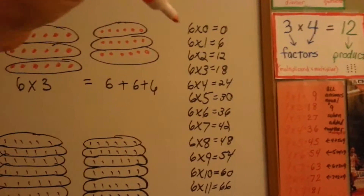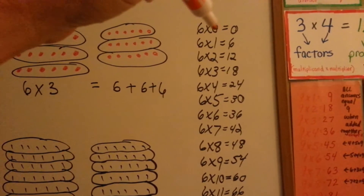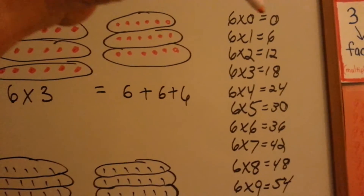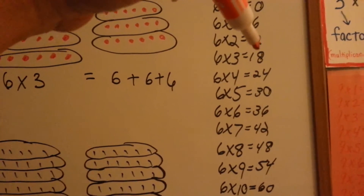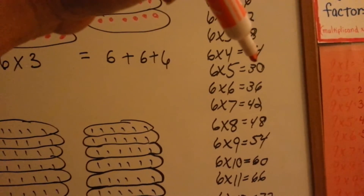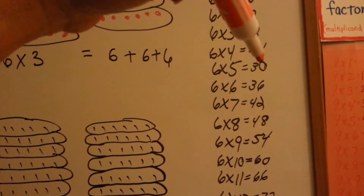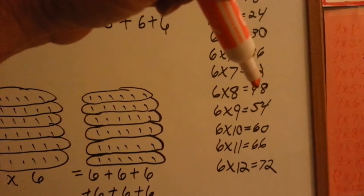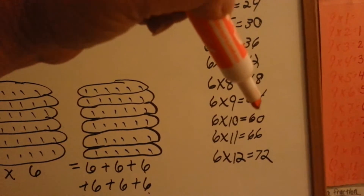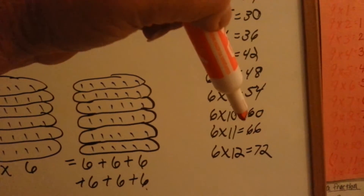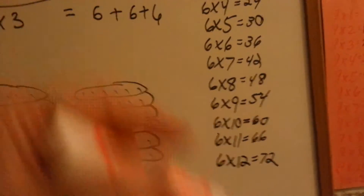Let's look at the 6 times table. Starting with 0, of course, 6 times 0 is 0. Then: 6, 12, 18, 24, 30 — just like in the 3 times table — 36, 42, 48, 54, 60, 66, and 72.